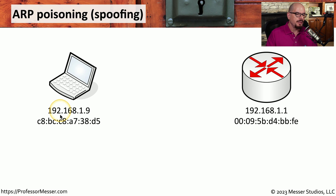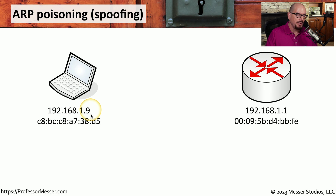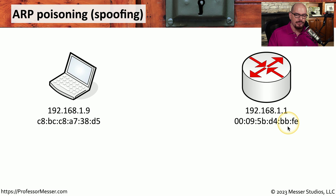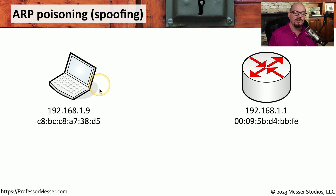The two devices the attacker would like to monitor are this laptop and this router. The laptop has an IP address of 192.168.1.9 and a MAC address ending in 3-8-Delta-5. The router has an IP address of 192.168.1.1 and a MAC address ending in Bravo-Bravo-Fox-Echo. When the laptop first connects to the network, it doesn't know the hardware address of the router — all it has is the IP address. Our devices communicate by MAC address, so it's the Address Resolution Protocol, or ARP, that resolves the MAC address from an IP address.